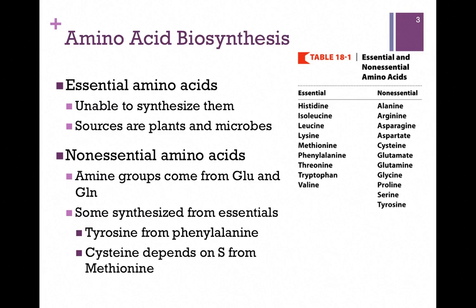For instance, tyrosine is actually synthesized from phenylalanine, and cysteine depends on methionine. And so we might put quotes around non-essential, because some of these we can't actually make literally from scratch — we need a starting material that's still an essential amino acid.